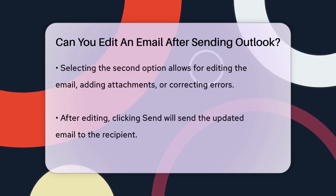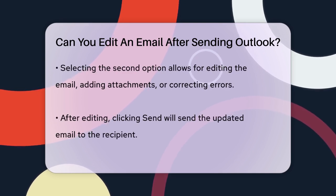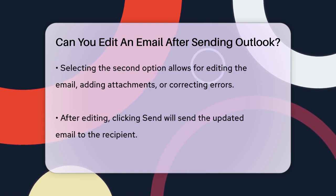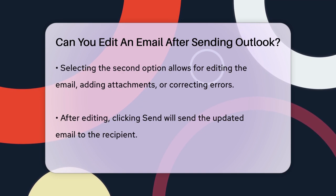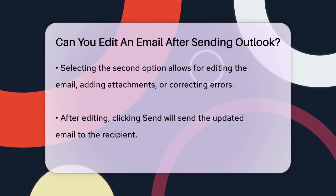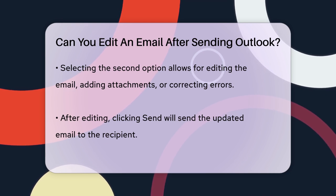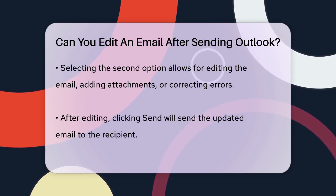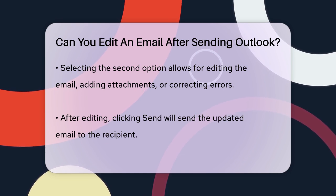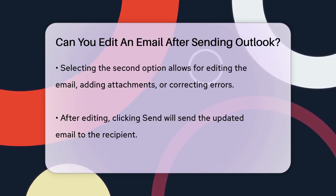You'll see two options: delete unread copies of this message, or delete unread copies and replace with a new message. If you want to edit the email, you'll choose the second option. Once you select this, you'll be able to edit the email, add any missing attachments, or correct any typos. After you're done editing, just click Send, and the new version of the email will be sent to the recipient.